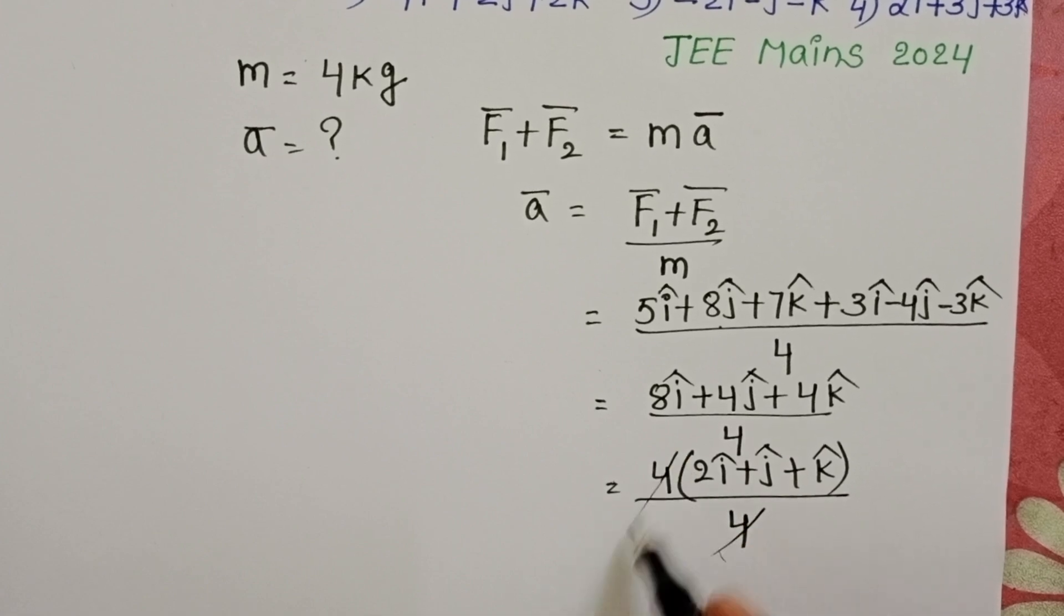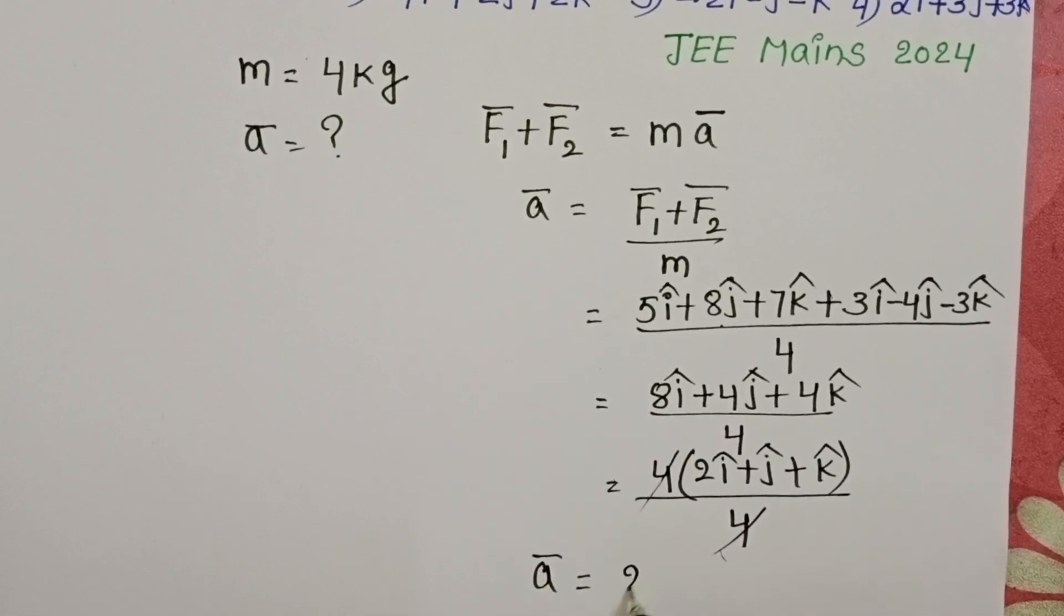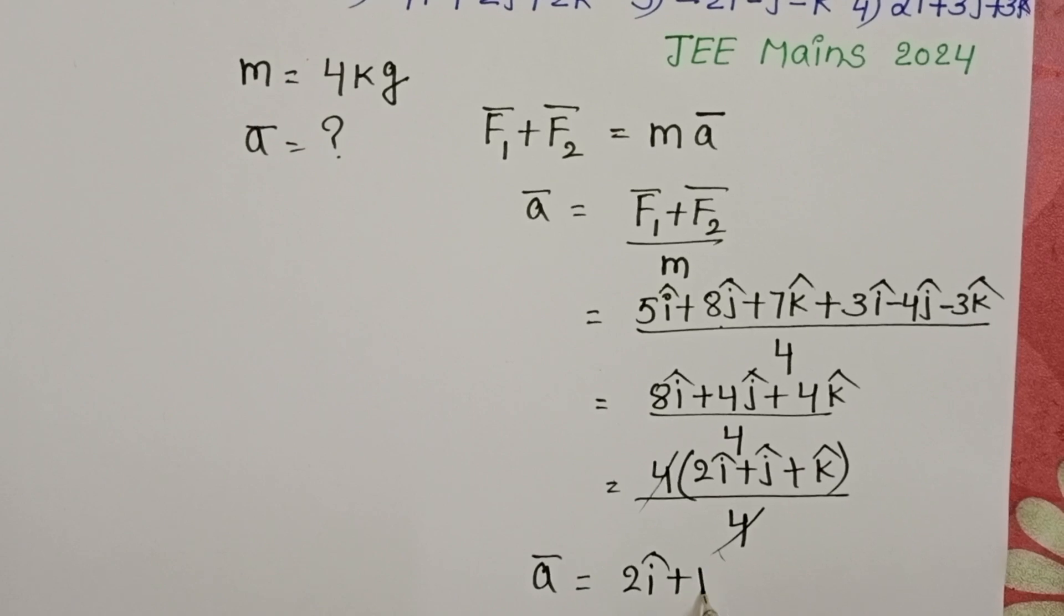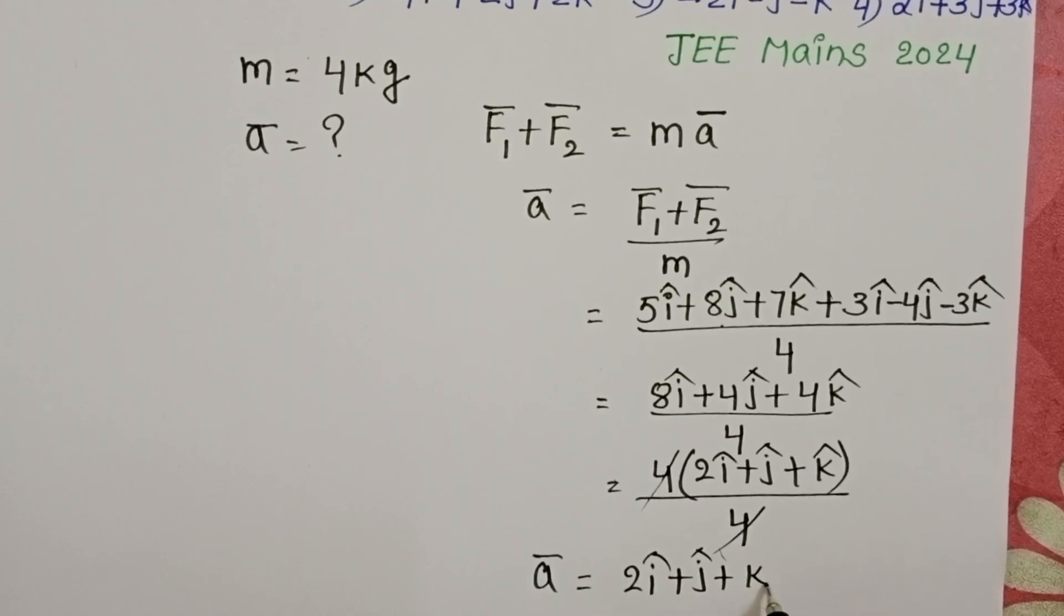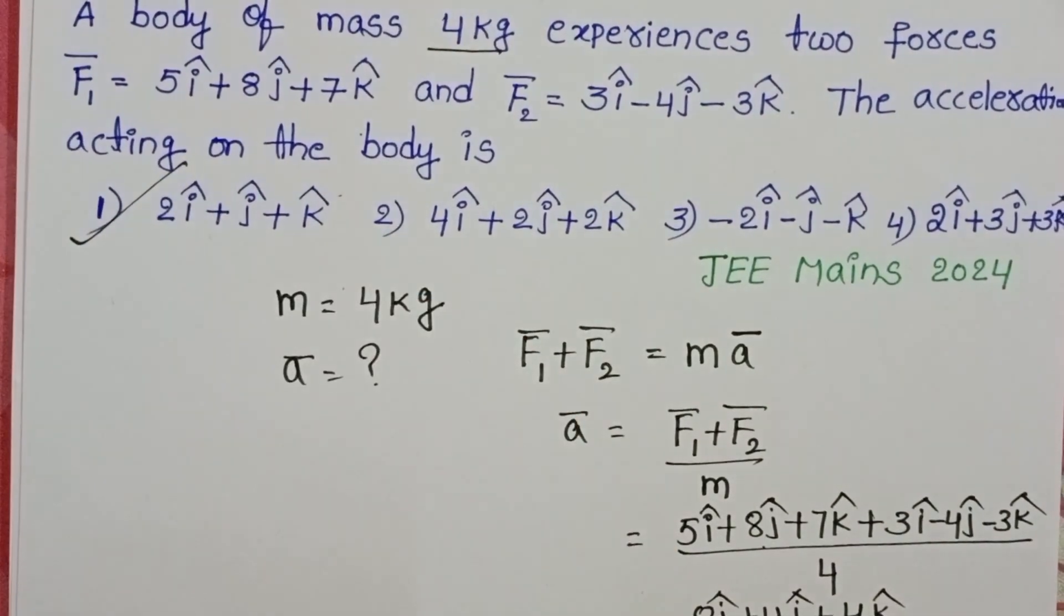Here 4, 4 get cancelled. Acceleration is equals to 2i cap plus j cap plus k cap. First option is correct.